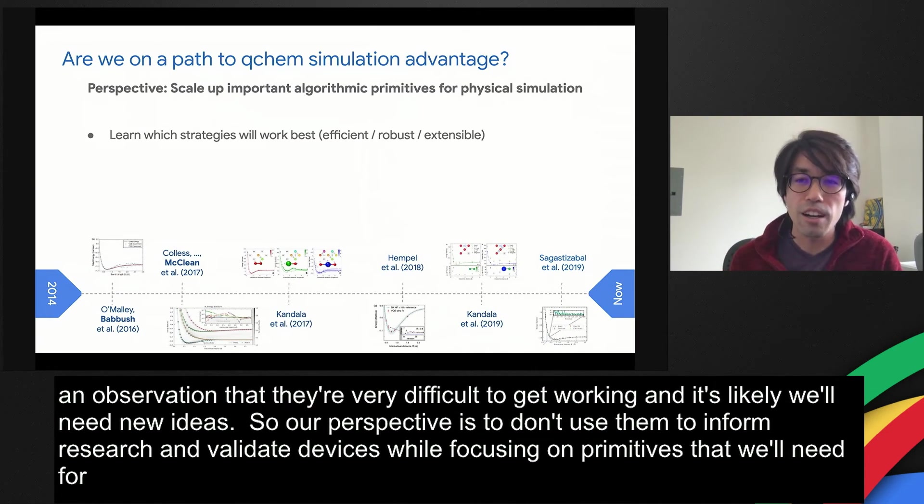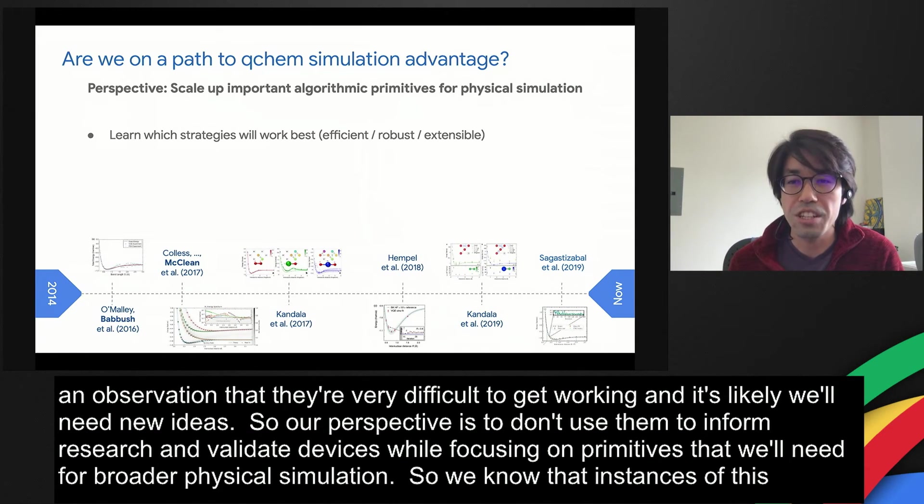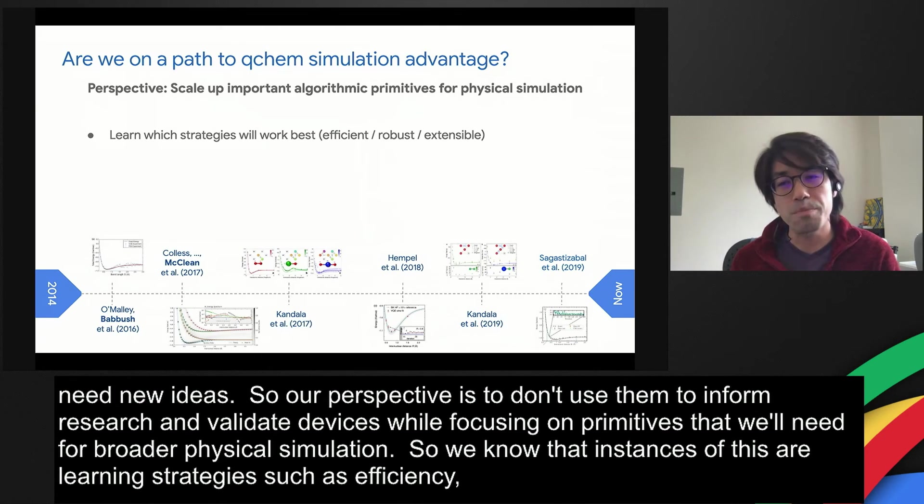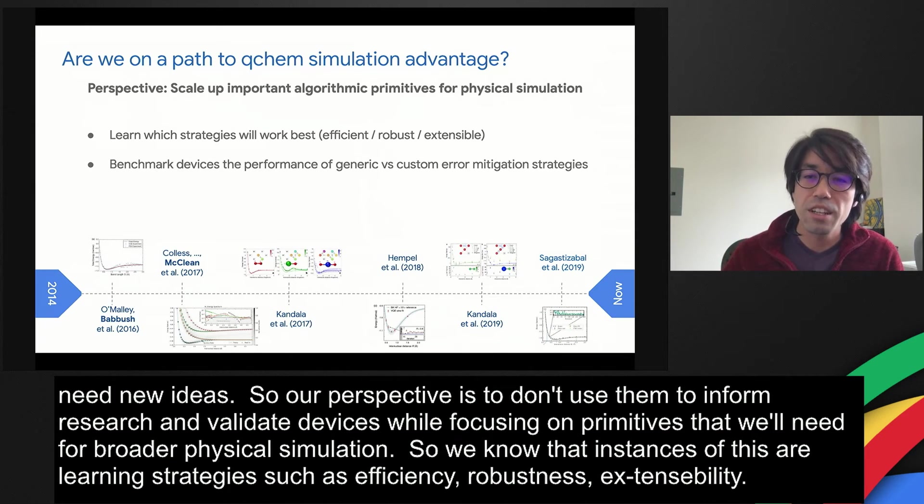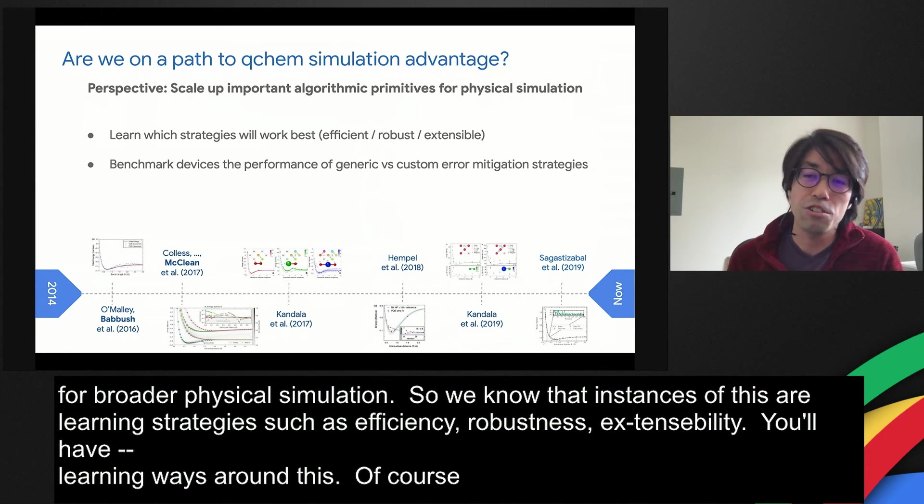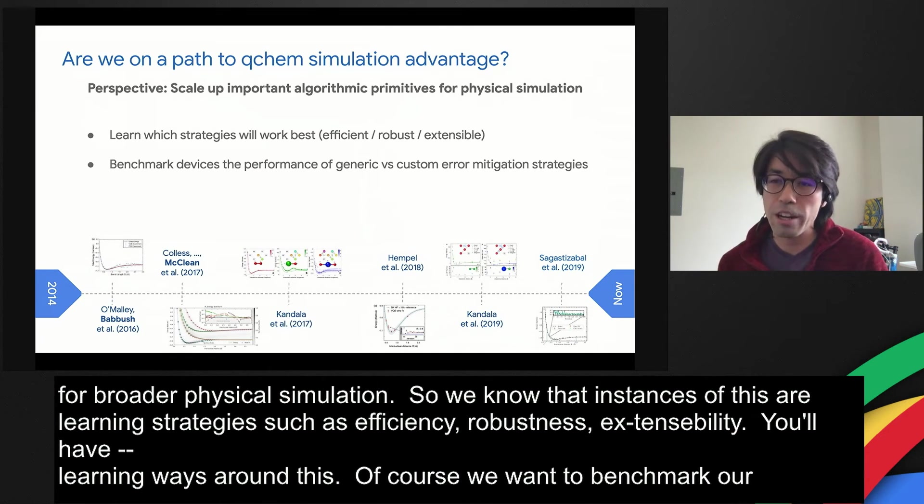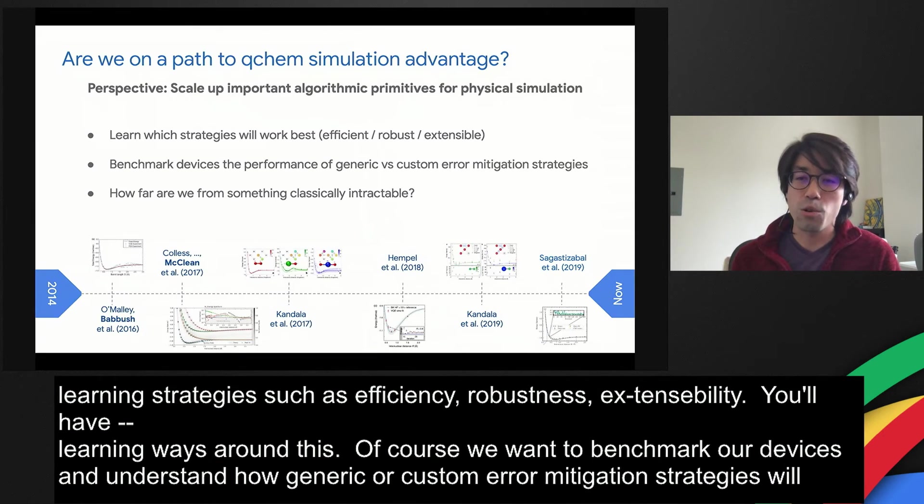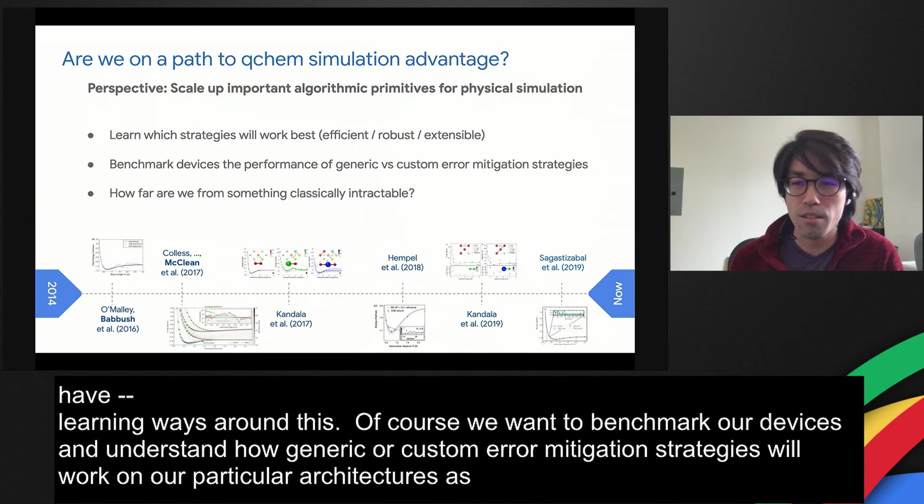We know that instances of this are learning strategies such as efficiency, robustness, and extensibility. We know that some circuits you'll run into a concentration of measure problem, others you'll have a barren plateaus problem, so learning ways around this. Of course, we want to benchmark our devices and understand how generic or custom error mitigation strategies will work on our particular architectures as we scale up. And we want to understand how far we are from something that's classically intractable.